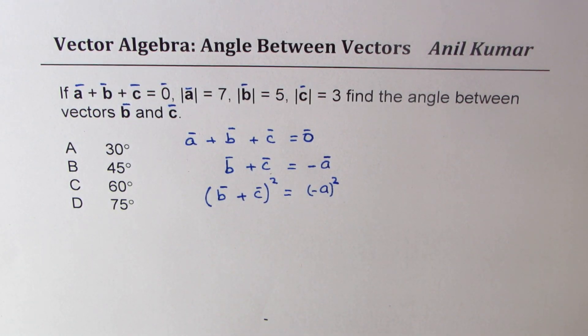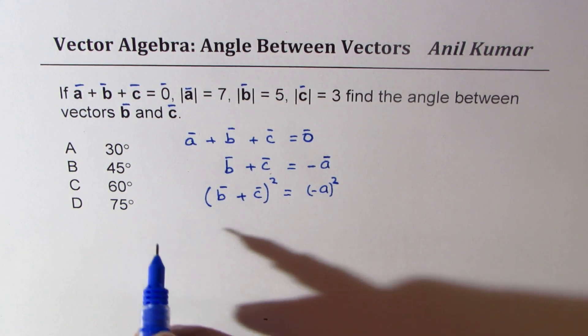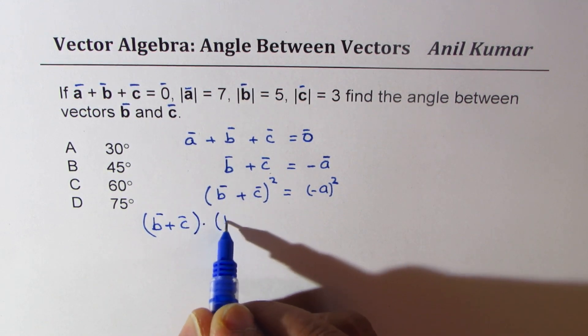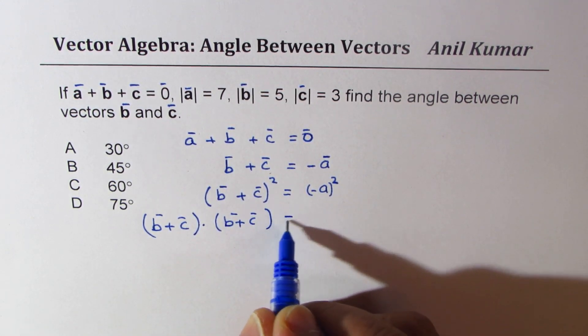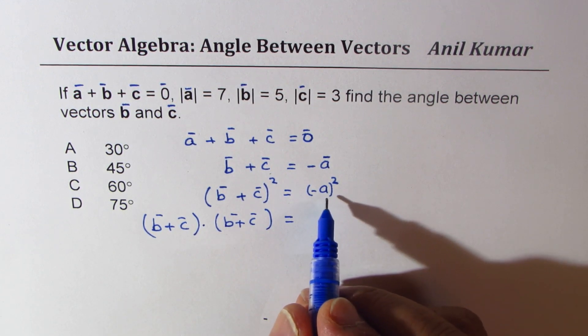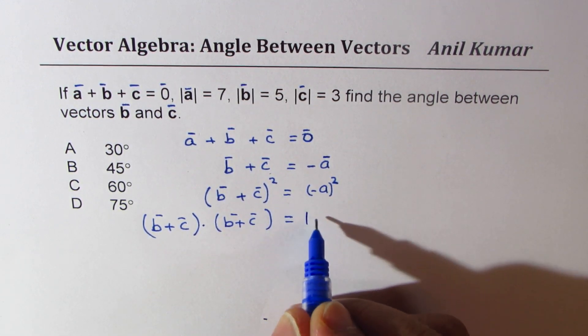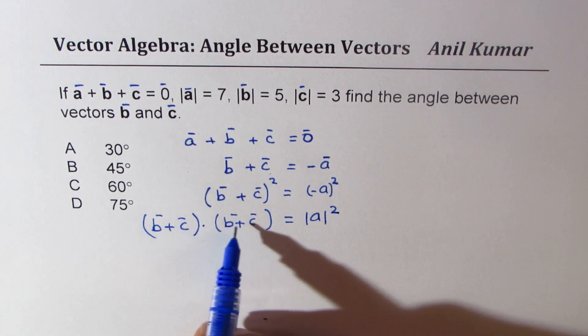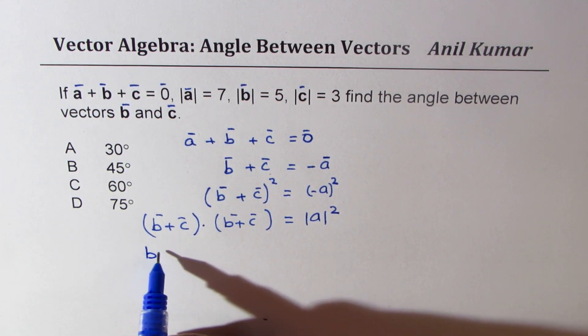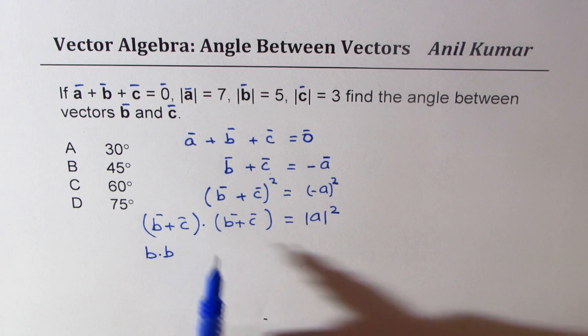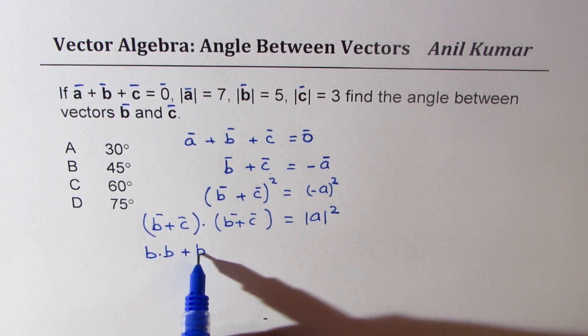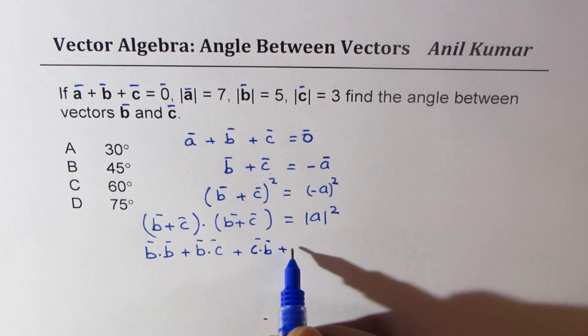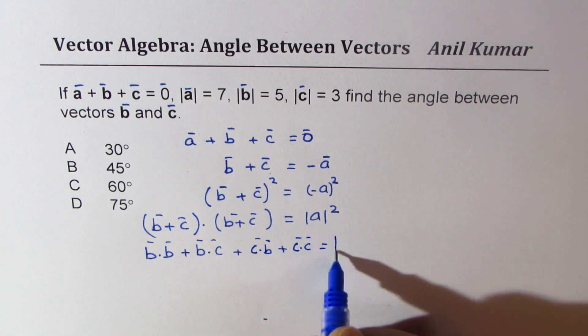Squaring means we are doing the dot product, so basically it is (b + c) · (b + c), and here we get the magnitude squared of a, which is |a|². This gives us b·b, which is |b|² plus b·c plus c·b plus c·c equals |a|².